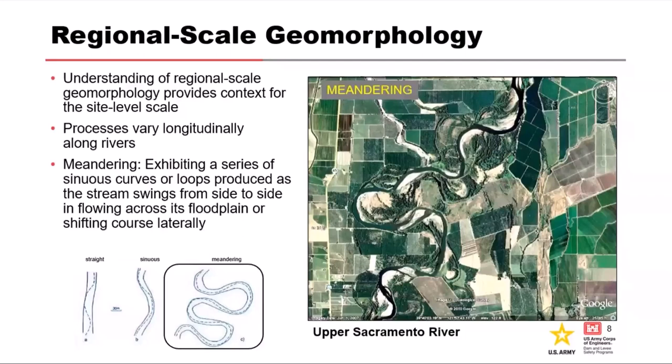The next couple of slides talk about regional-scale geomorphology. I'm going to show examples from California because it has fantastic geomorphology, and it also has a lot of levees along the Sacramento, San Joaquin, and other rivers.